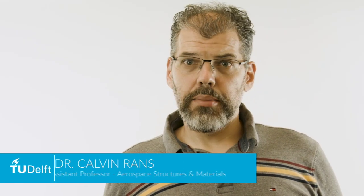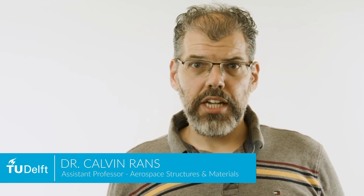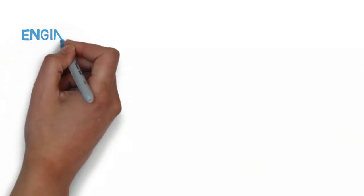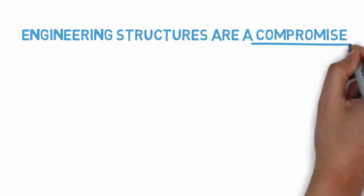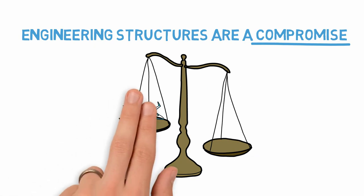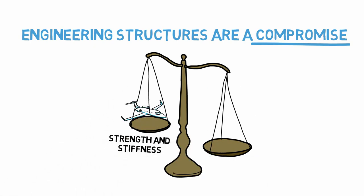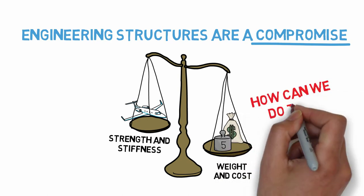How can we go about selecting a material for a given structural application before the entire structure is even designed? As we saw in an earlier video, our decisions necessitate us to make compromises between structural capability, such as strength and stiffness, and design constraints such as weight and cost. So how can we go about doing this?